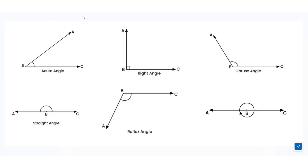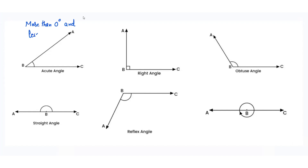The first type of angle is acute angle. The angle which is more than 0 degrees and less than 90 degrees is called an acute angle.